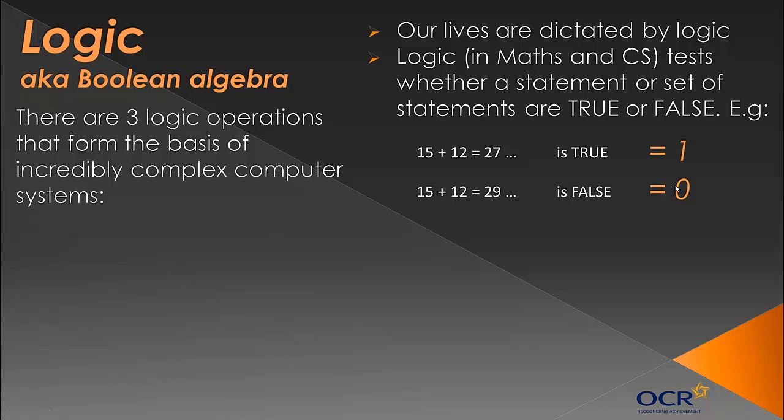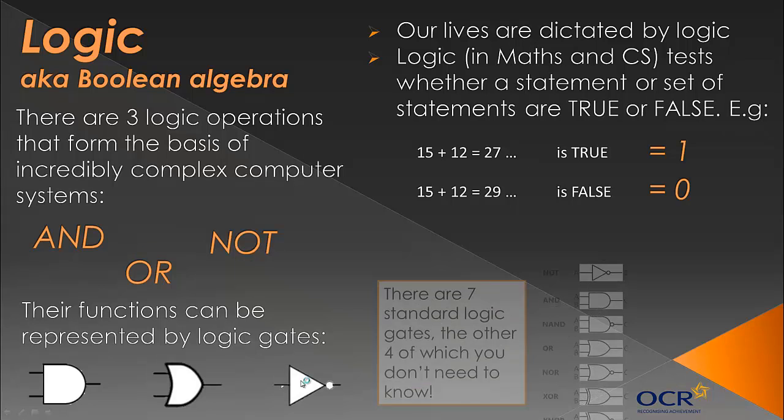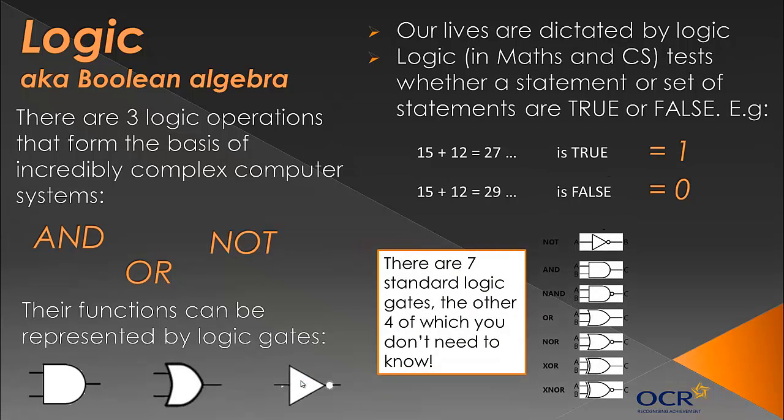So there are three logic operations that form the basis of incredibly complex computer systems. Everything in our computer is formed with these three different types of operations: AND, OR, and NOT. And their functions can be represented by logic gates, which we'll look at in the next couple of slides. This is the AND gate, this is the OR gate, and this is the NOT gate. And there are actually seven standard logic gates. You've got gates like NAND, NOR, et cetera, which are combinations of these three gates. But fortunately you won't need to look at them. If you plan to do A-level computer science, you will be looking at them, but fortunately for you, you don't need to look at them now.